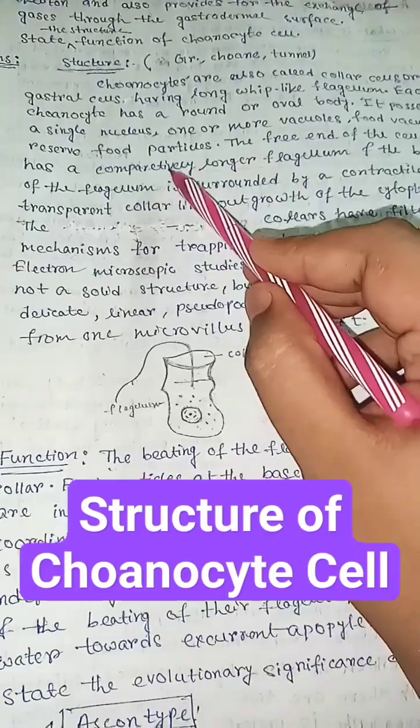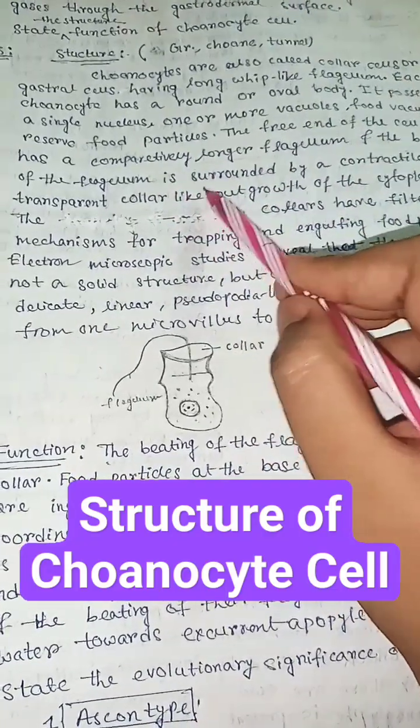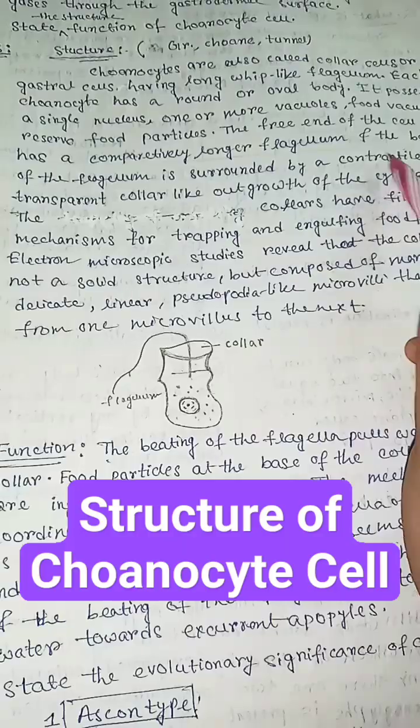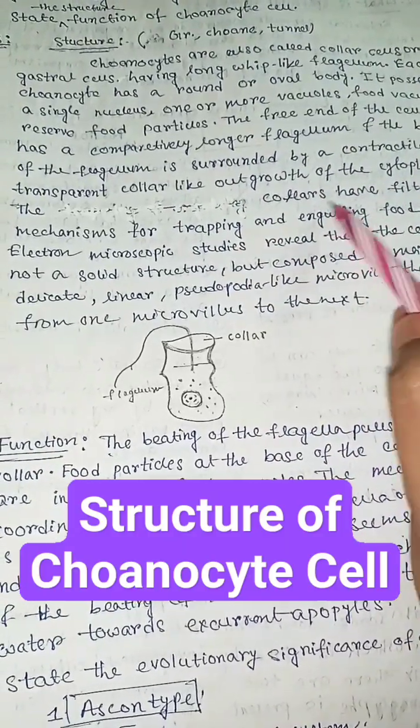The free end of the cell body has a comparatively longer flagellum, and the base of the flagellum is surrounded by a contractile transparent collar-like outgrowth of the cytoplasm.